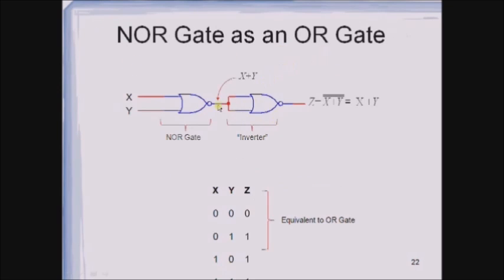This is the implementation of the OR gate with the help of NOR gates. NOR followed by NOT is equivalent to OR. Initially, we use one NOR gate receiving X and Y inputs, giving output (X + Y)̄. This is then given as input to one more NOR gate acting as an inverter, so the output becomes (X + Y)̄̄ which equals X + Y. This truth table and expression resemble the OR gate. This is the symbol used for representing the OR gate with the help of NOR gates.